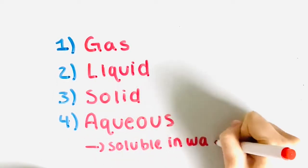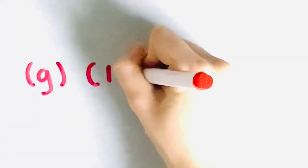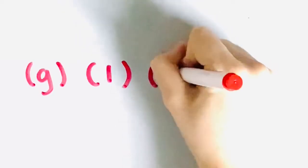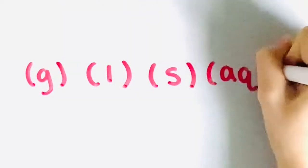Aqueous means it's soluble in water and it only applies to compounds. All of these states will be written as subscripts next to their respective elements or compounds. Gas will be a lowercase g in brackets, liquid will be a lowercase l in brackets, solid will be a lowercase s in brackets, and aqueous will be a lowercase aq in brackets.